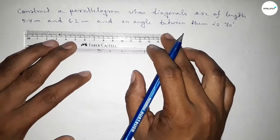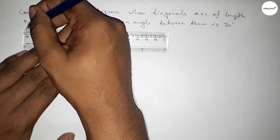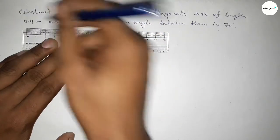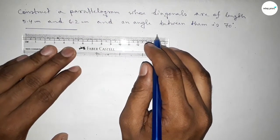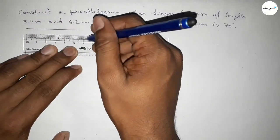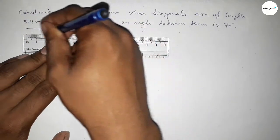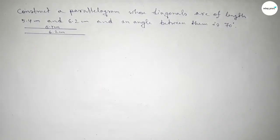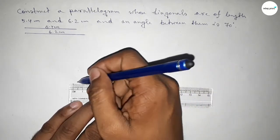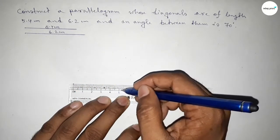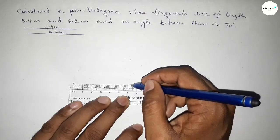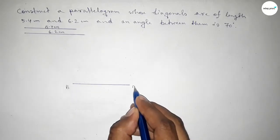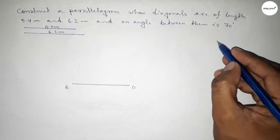First of all, we have to draw two diagonals: one of 5.4 centimeters and one of 6.2 centimeters. So first, drawing a line of length 6.2 centimeters, and taking point B at one end and point D at the other end.